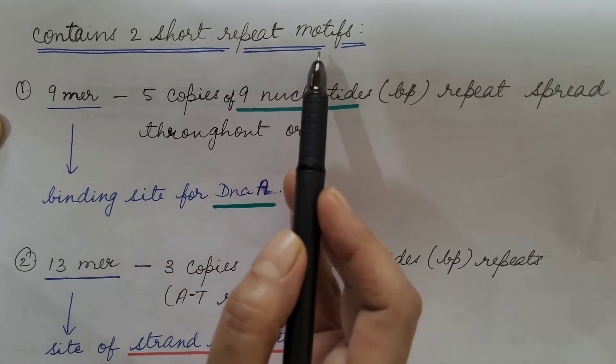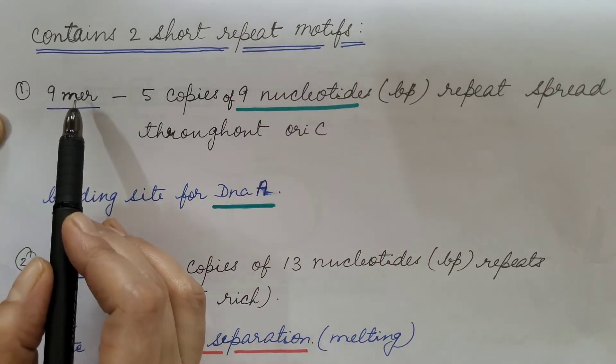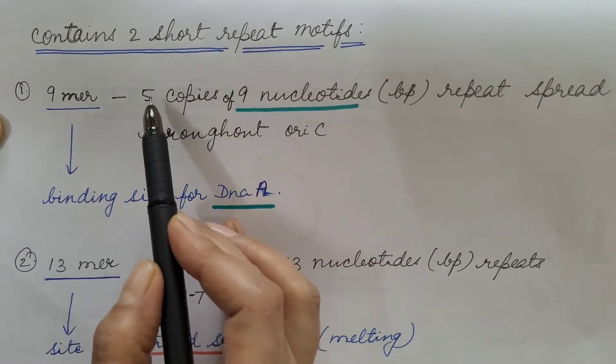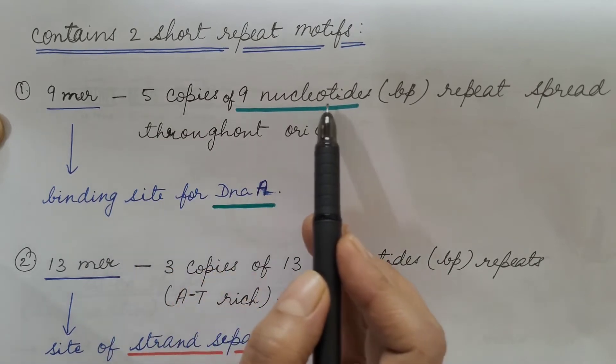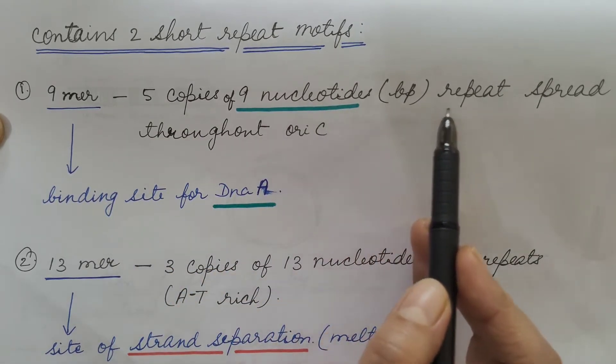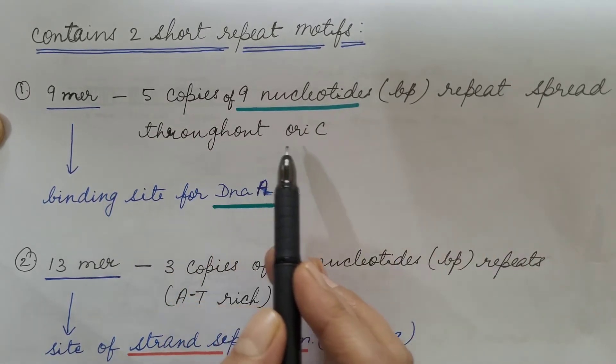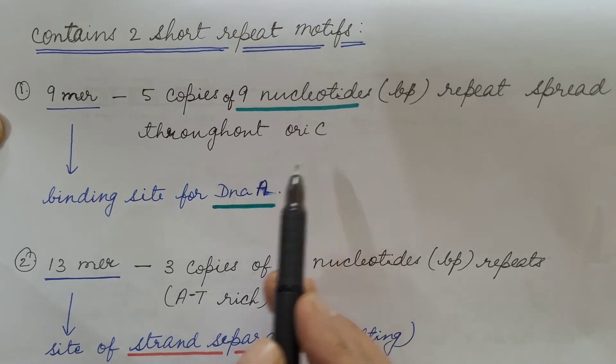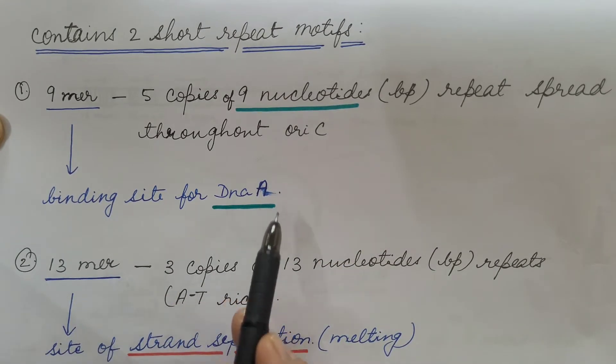It contains two short repeat motifs. One is 9-mer. There are 5 copies of 9 nucleotides or 9 base pair repeats spread throughout OriC. It is the binding site for DNA-A.